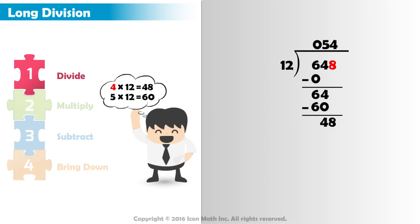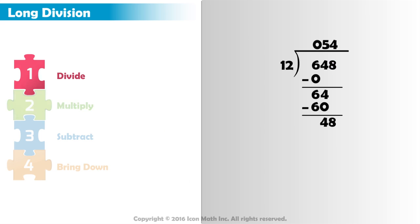We write a 4 above the 8 in the 100's place. Now, we multiply. 4 times 12 equals 48. Then we subtract. 48 minus 48 equals 0.